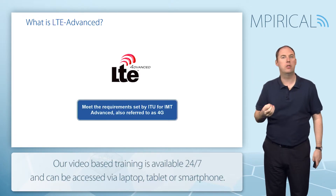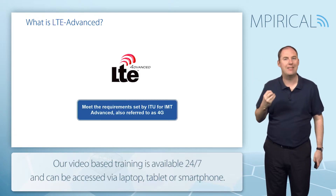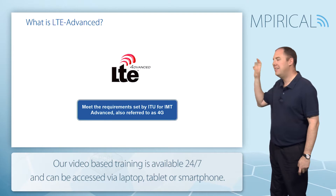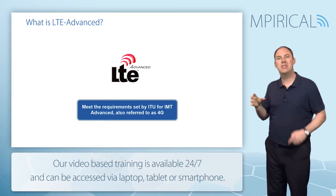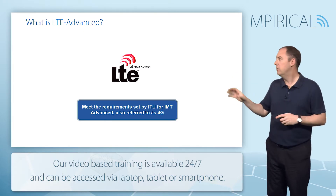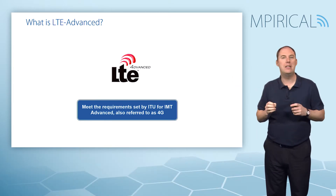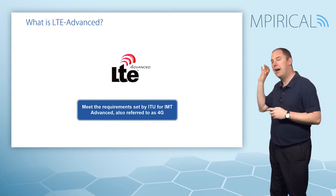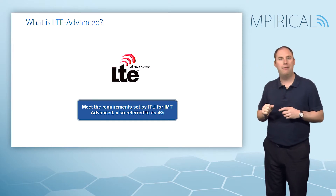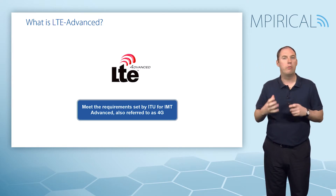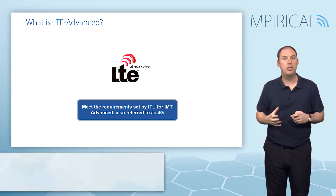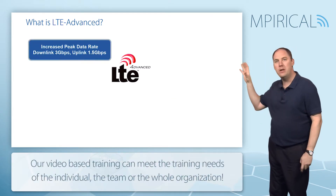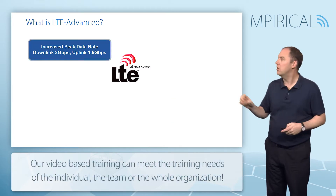Where did LTE Advanced come about, and why do we have a different term? LTE Advanced was designed to meet the requirements from the ITU, specifically IMT Advanced — what they refer to as 4G. This was very much to do with increasing the performance.